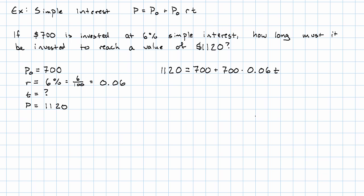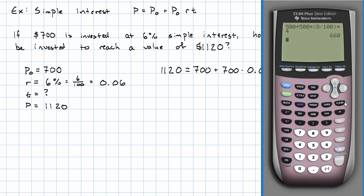Okay, simplifying the right-hand side, I'll take 700 times 0.06, I get 42.